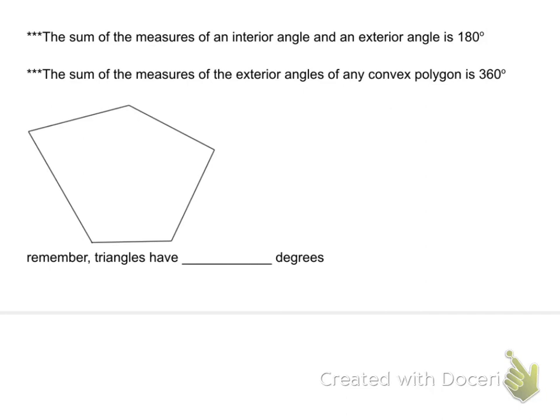Huge note with a lot of stars, so it must be somewhat important. The sum of the measures of an interior angle and the exterior angle is 180. We already talked about that because they form a straight line. The second one, very important. The sum of the measures of the exterior angles of any convex polygon is 360 degrees. Now this is a little harder to demonstrate on the paper first. So I'm going to pause the video and show you on that particular object.